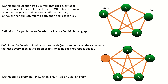For the purposes of this video, we'll use the term Eulerian trail to refer to open Eulerian trails, and the term Eulerian circuit to refer to closed Eulerian trails. That way we don't have to keep clarifying whether a given trail is open or closed.